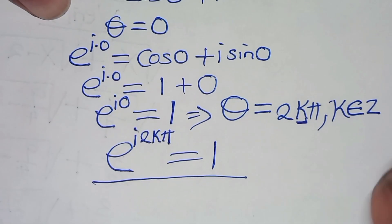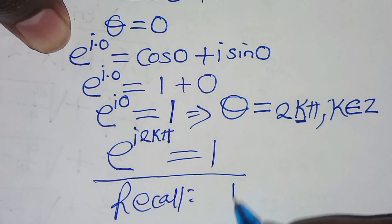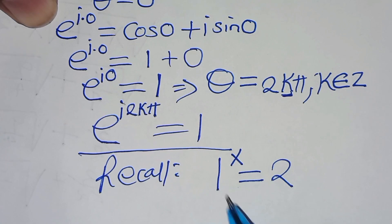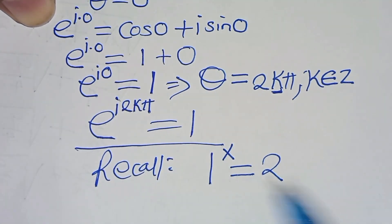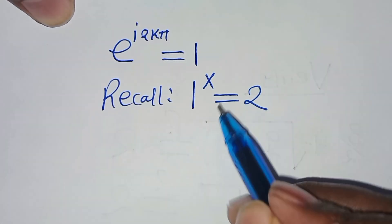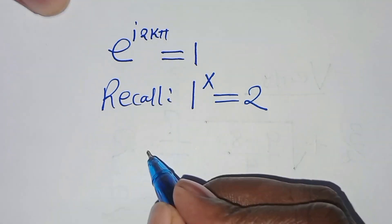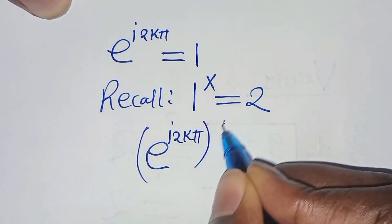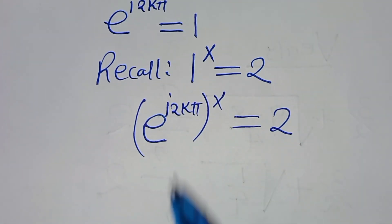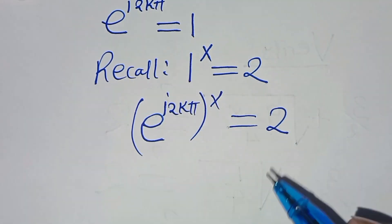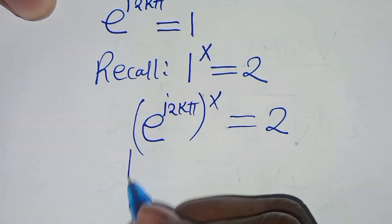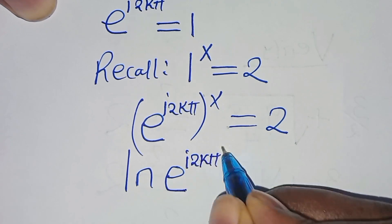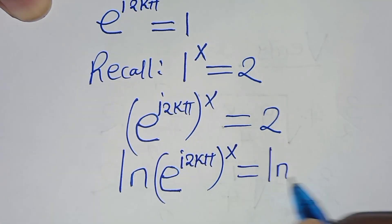Recalling that we have 1 to the power of x equals 2, let's substitute 1 with e to the power of i·2kπ, so that we have e to the power of i·2kπ, raised to the power of x, this is equal to 2. Now let's introduce the natural logarithm on both sides to solve for x.